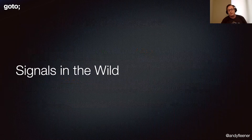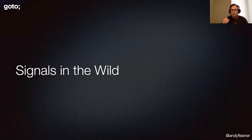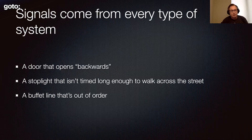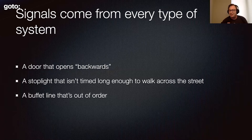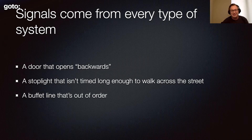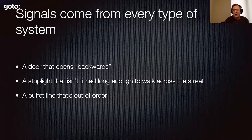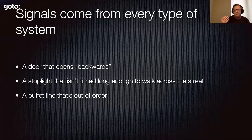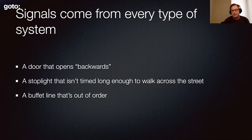Here are some examples of signals in the wild. These come directly from Todd Conklin: doors that open backwards, a stoplight not timed long enough for you to walk across the street, and a buffet line that's out of order — if you put the tortillas at the end of the line when you're trying to make a taco, it's not going to work. The door that opens backwards brings to mind the Norman door — the door handle where you're not sure whether to pull or push. User experience folks focus on what signals the software we create sends to users, and those signals are everywhere.